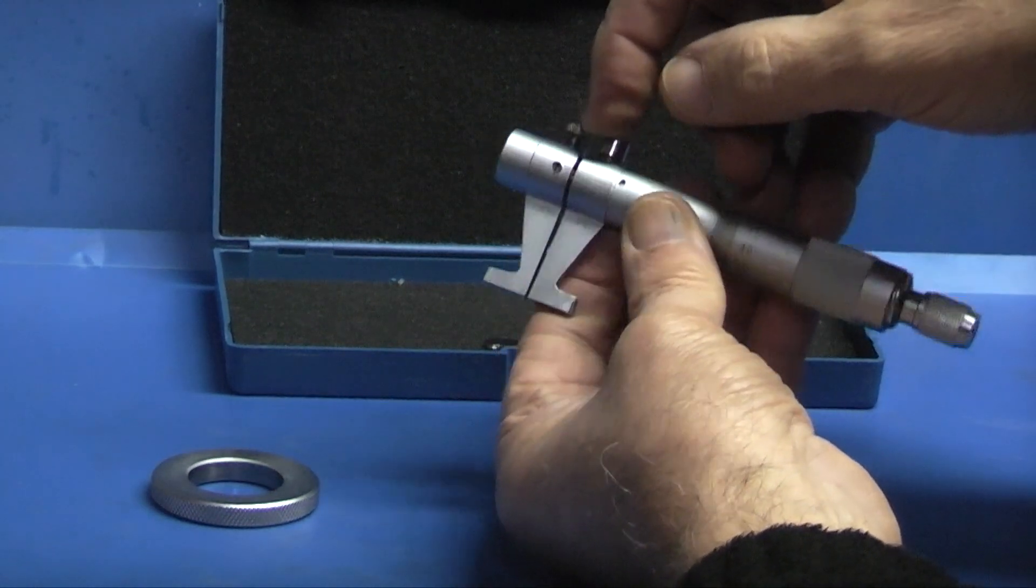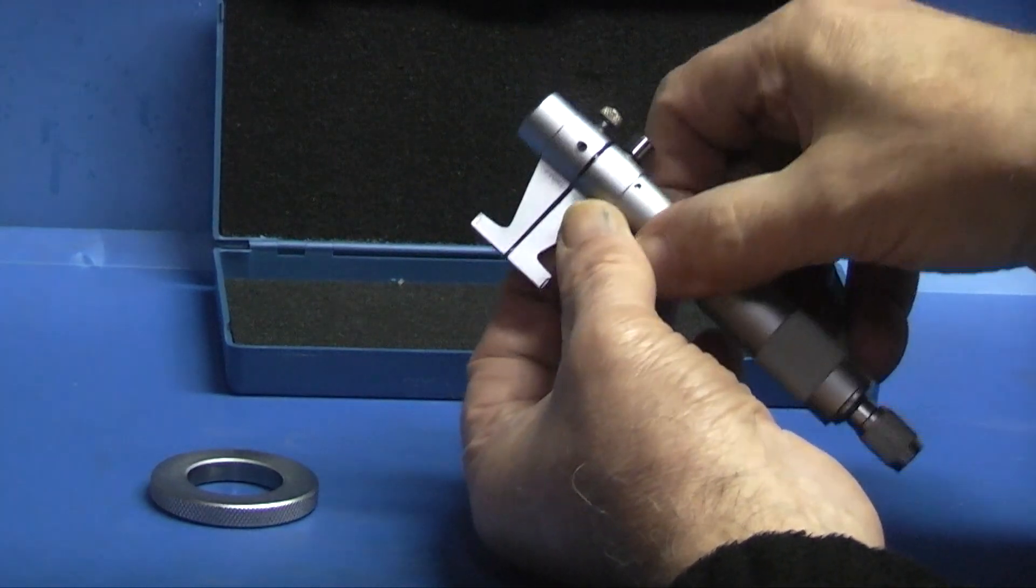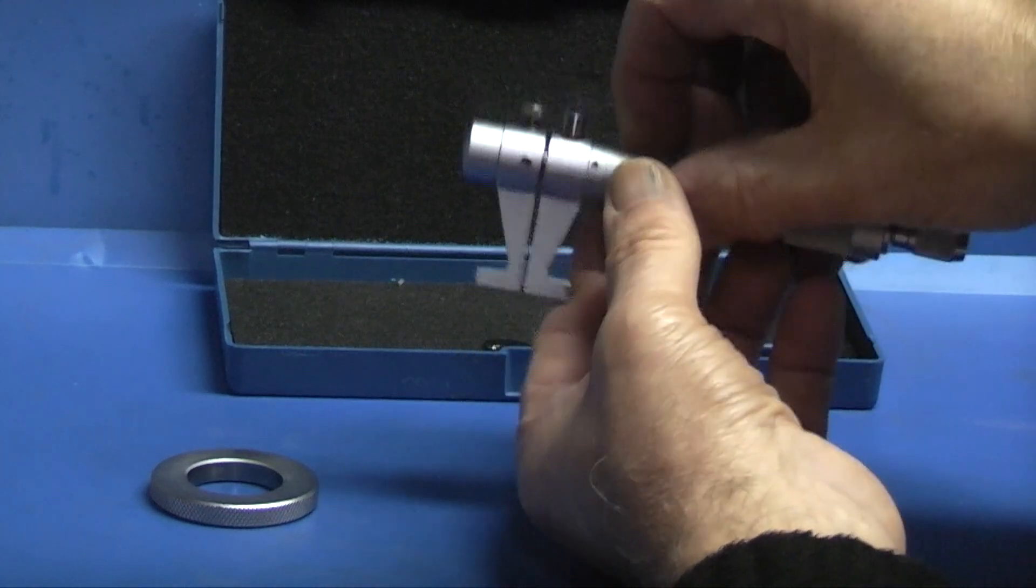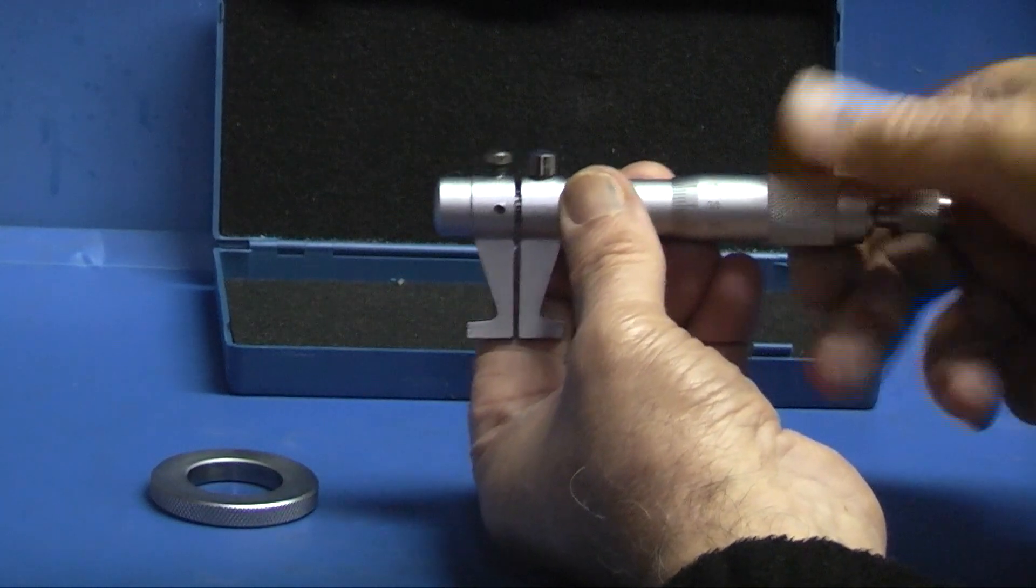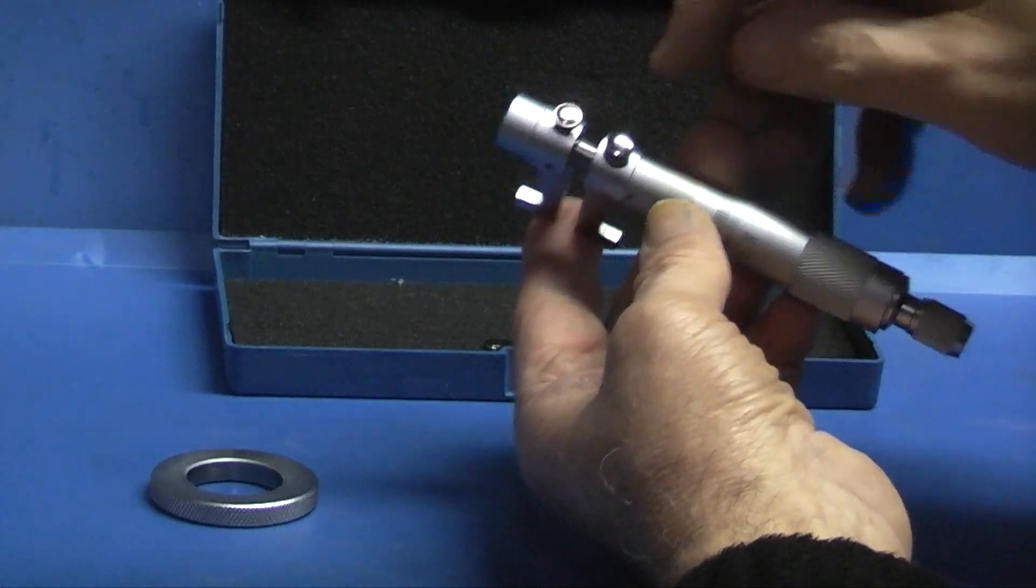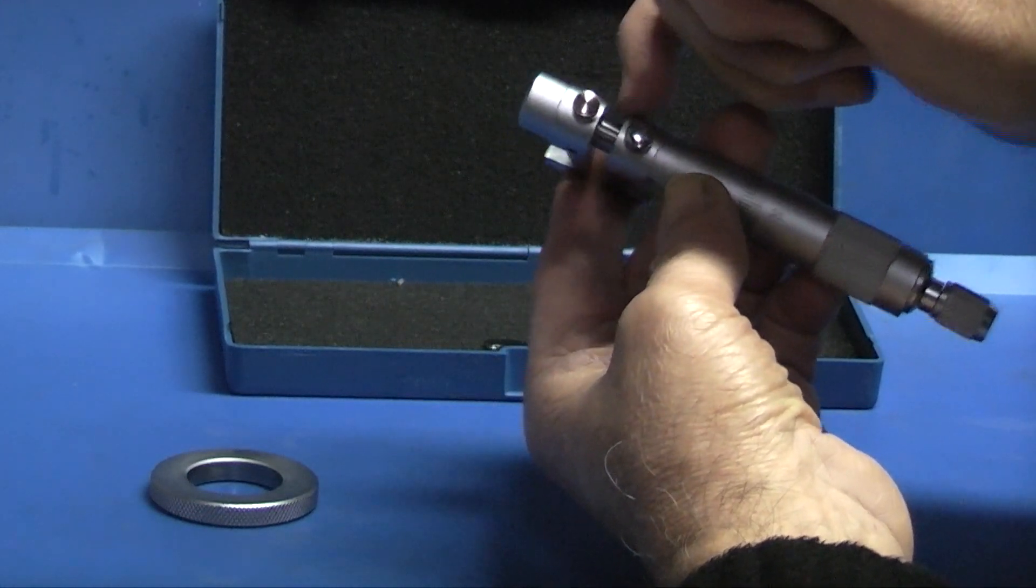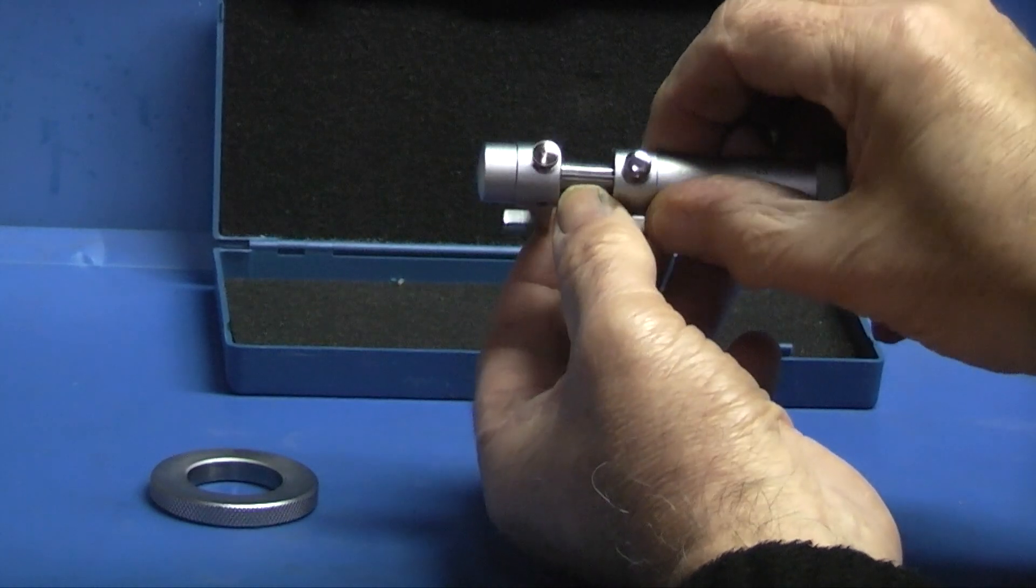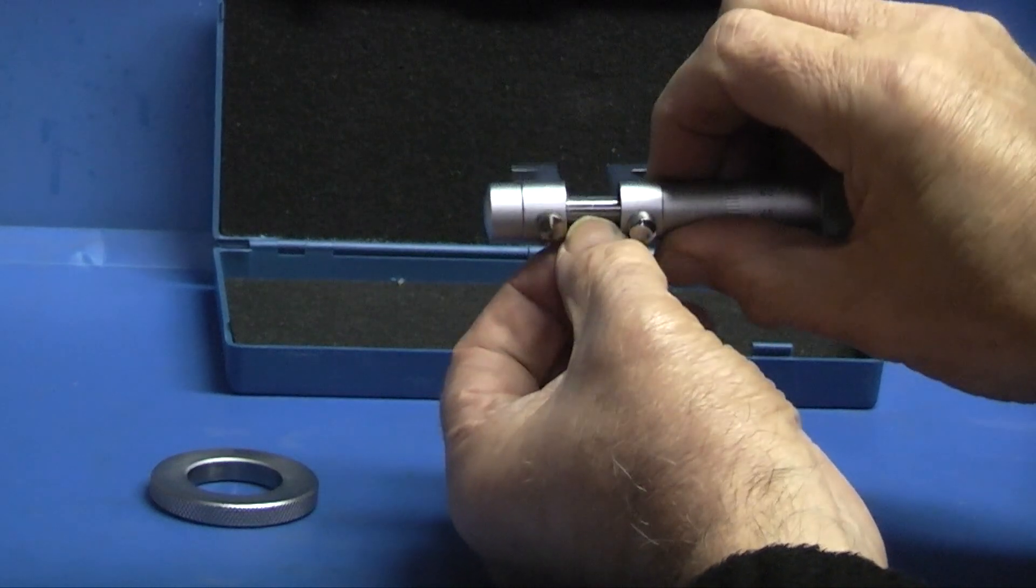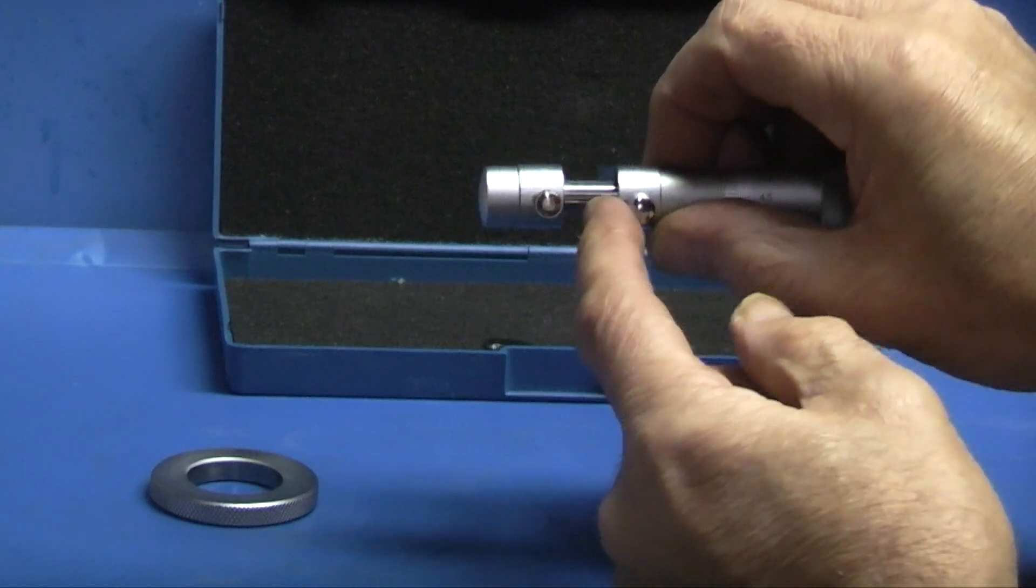This part here is just a fixing screw and it holds the leg onto the body and stops it twisting round. It also has a slot in the spindle to stop the other leg twisting. You can see the slot there along the spindle that this has a peg that goes into it.